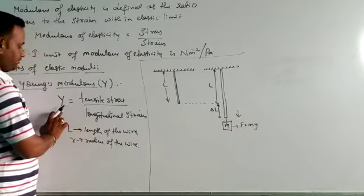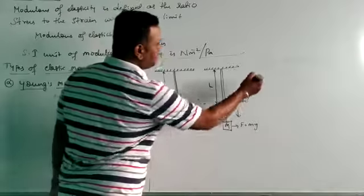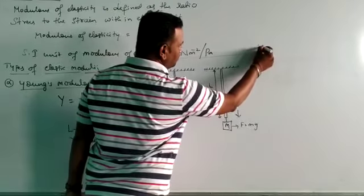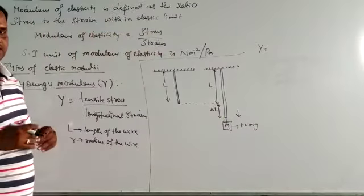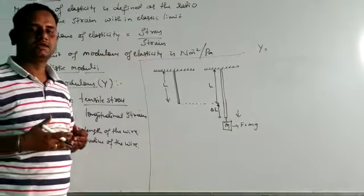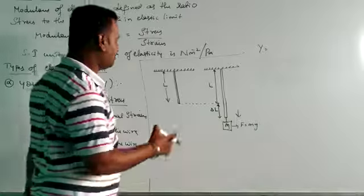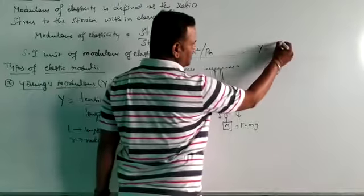According to the definition of Young's modulus, we can write Y equals tensile stress divided by longitudinal strain. Tensile stress is defined as the force acting on the body, which is F over A.